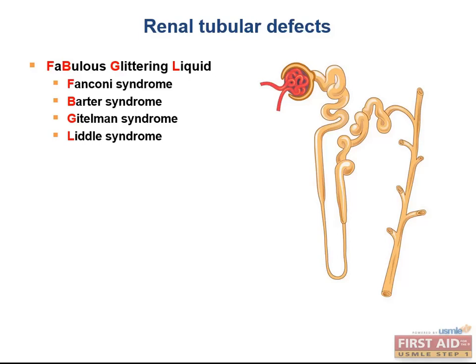Now that we've discussed nephron physiology, it's a good time to look at the renal tubular defects. The eponyms can be hard to remember, but I like the following mnemonic because it helps you remember the order of the syndromes along the nephron. It goes: the kidneys put out a fabulous glittering liquid.